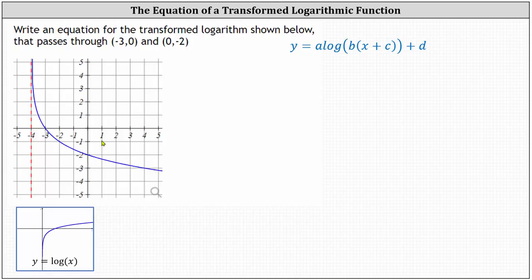We'll build an equation using common log in the form y equals a times common log of the product of b and the quantity x plus c, plus d.